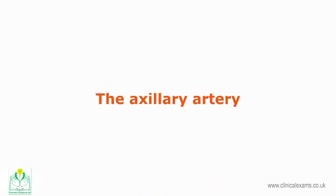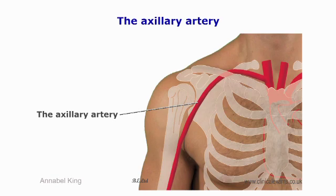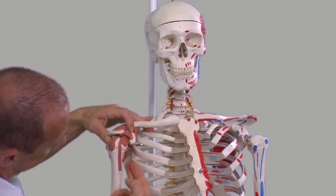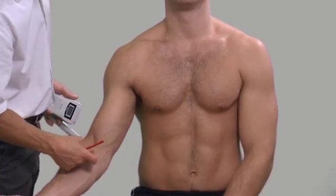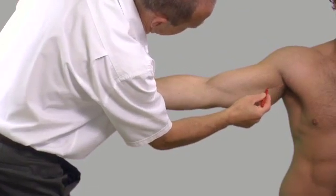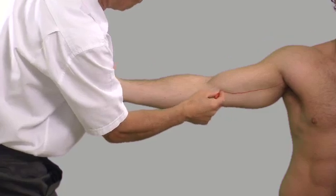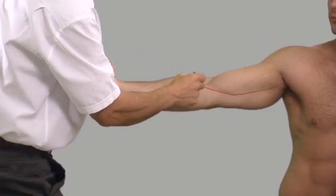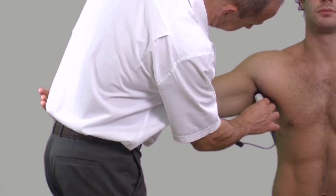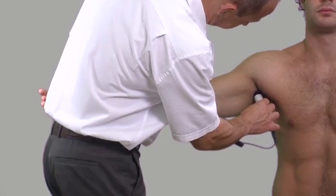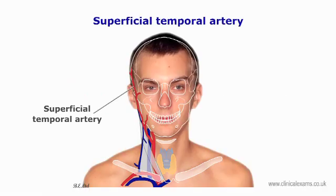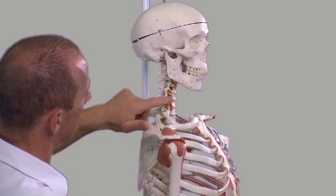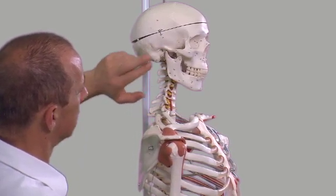The axillary artery may be palpated deep within the axilla. It is best to have the arm relaxed so that muscular tension does not mask the pulsations. Insert one or preferably two fingers superiorly and laterally against the lateral axillary border.